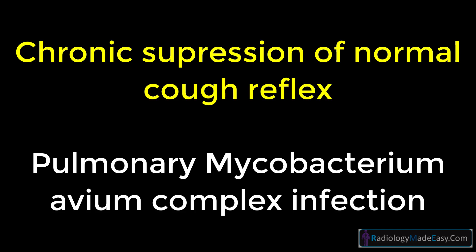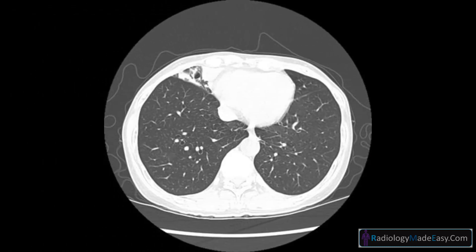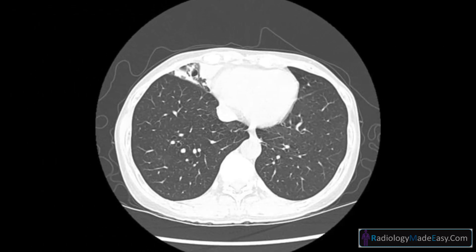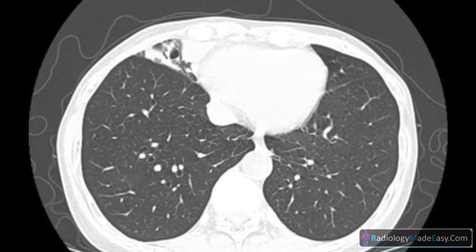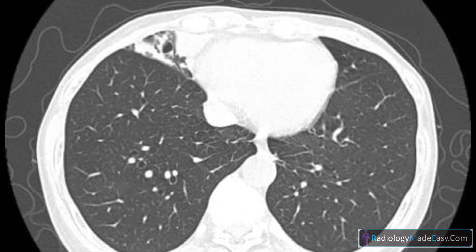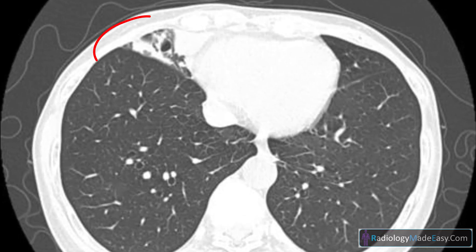Lady Windermere's syndrome occurs due to chronic suppression of the normal cough reflex, which predisposes to pulmonary Mycobacterium avium complex infection. In this HRCT axial lung window, we can clearly see the collapse of the right middle lobe.